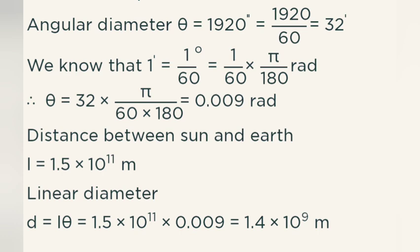Answer: Theta is equal to arc divided by radius. Angular diameter theta is equal to 1920 seconds, which equals 1920 divided by 60 equals 32 minutes. We know that 1 minute is equal to 1 degree divided by 60 equal to 1 divided by 60 into pi divided by 180 radian. Therefore, theta is equal to 32 into pi divided by 60 into 180 equal to 0.009 radian.